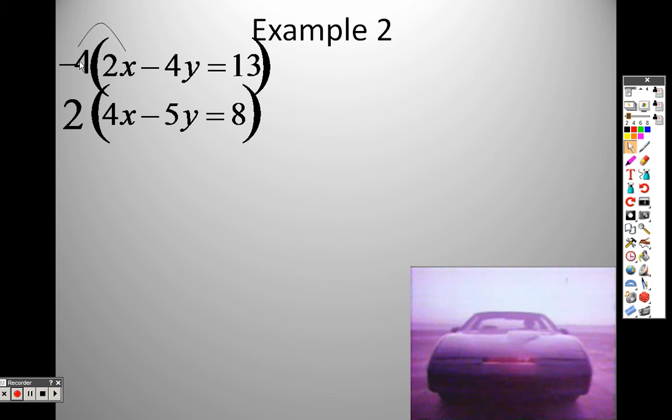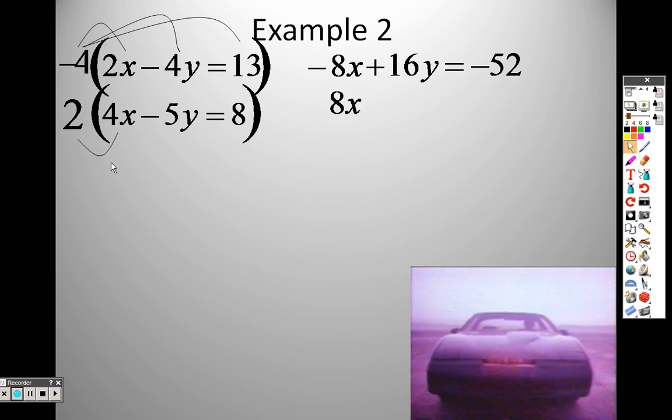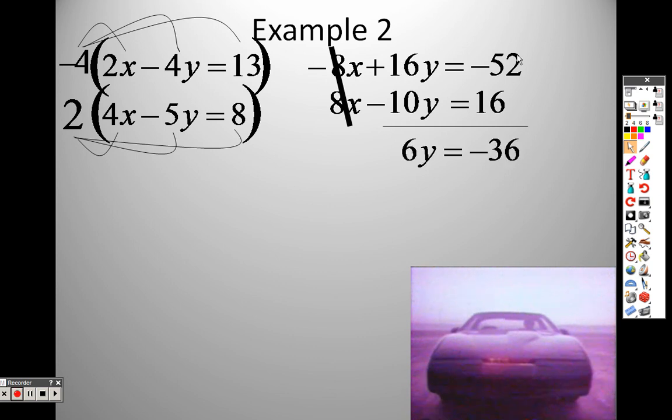I said to distribute, negative four times two x is negative eight x. Negative four times negative four y is positive 16y. Negative four times that 13, so all that equals negative 52. On the bottom, two times four is 8x. Two times a negative five is negative 10y, and that equals two times eight, which is 16. Now, if I add these straight down, look what happens. Negative eight and positive eight cancels out. When I add them straight down, 16 plus negative 10 is 6y. Negative 52 plus 16 is negative 36.